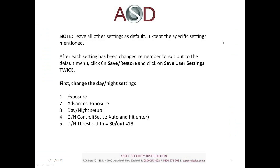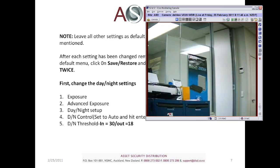Before adjusting any settings on the camera, make sure you're in the advanced menu using one of the methods mentioned. We want to leave all settings as default except for the specific settings we're going to change. After each setting has been changed, remember to exit out to the default menu, click on Save Restore, and click Save User Settings twice to make sure all changes are saved properly. The first thing we're going to do is change the day and night settings — we'll bring up the camera and go into it.